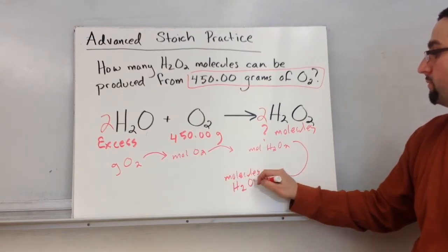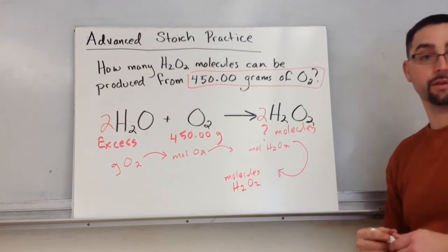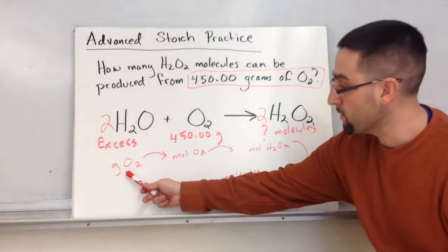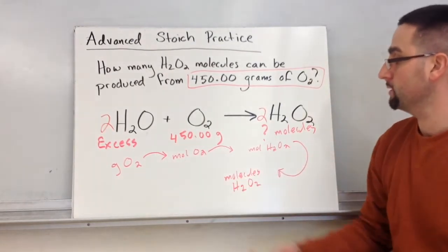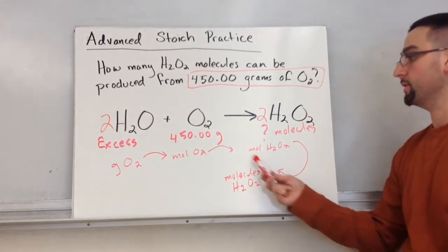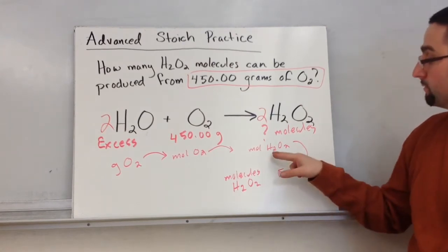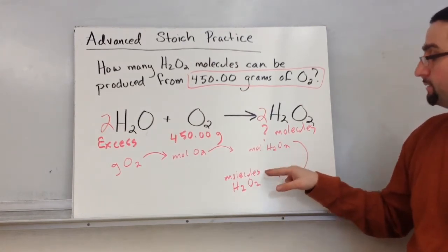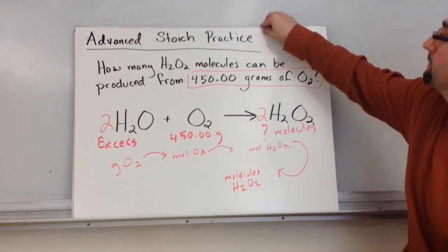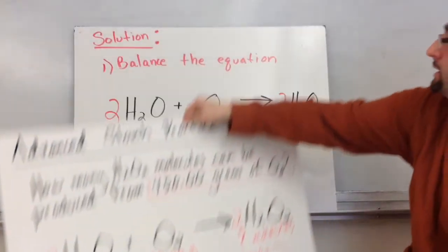All right, so that's my game plan. Grams of O2 to moles of O2, moles of O2 to moles of peroxide using the balanced equation, and then finally we're going to jump from moles of peroxide to molecules. Here's what I did. As always, I did this up previously and I calculated: